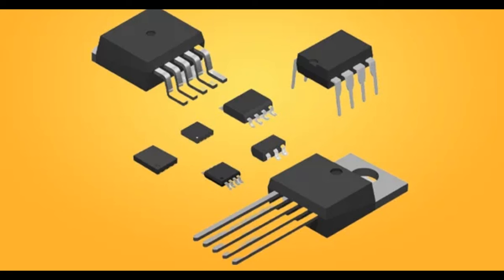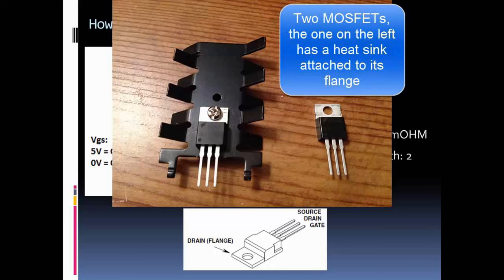MOSFETs play a significant role in voltage regulation within electronic circuits. Voltage regulation is the process of maintaining a stable output voltage despite variations in the input voltage or load conditions, and voltage regulators are used to achieve this stability.